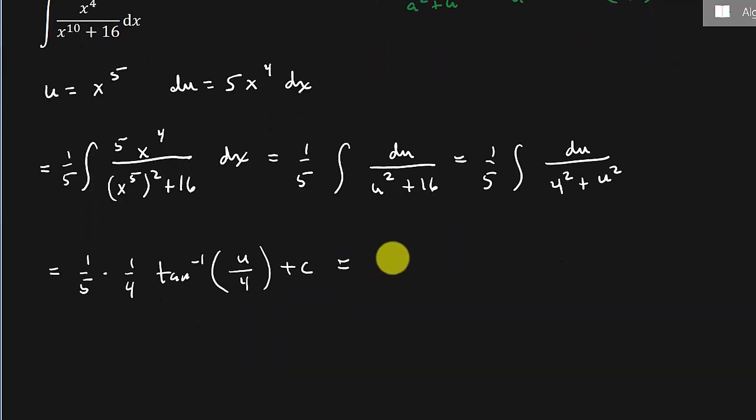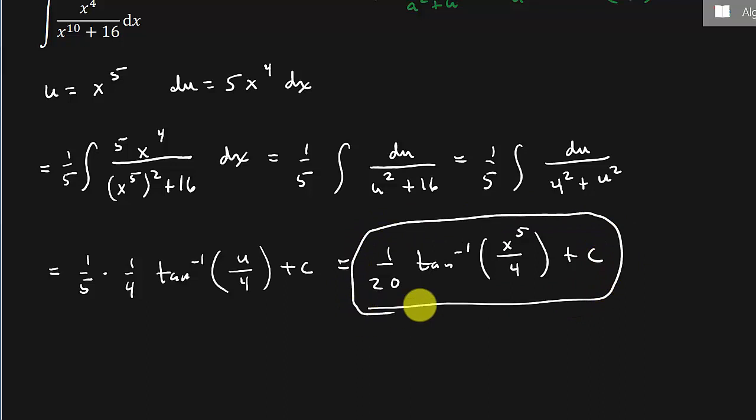And so that's going to give me 1 over 20 inverse tangent of, now in the place of u, I've got to put x to the fifth back in there, x to the fifth over 4 plus c. And this is your answer.